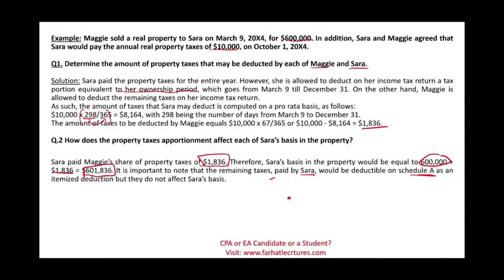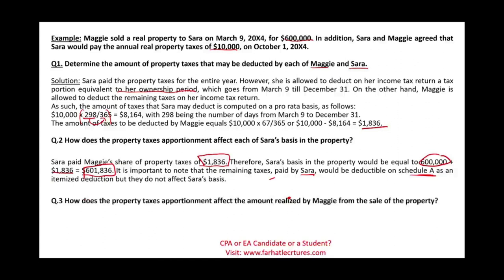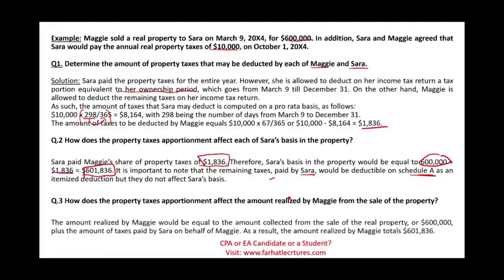How does the property tax apportionment affect the amount realized by Maggie? The amount realized by Maggie equals the amount collected ($600,000) plus the amount of taxes paid on her behalf ($1,836). Therefore, it's $601,836. Because she was supposed to pay that $1,836 and somebody paid it on her behalf, it is amount realized to her.